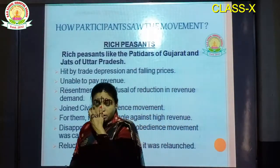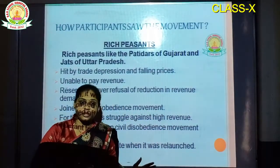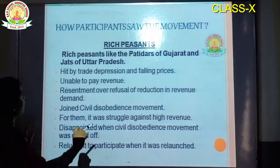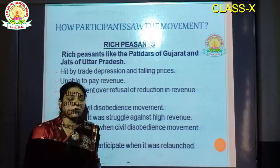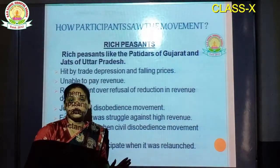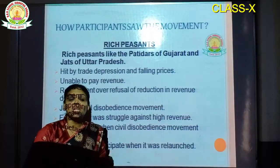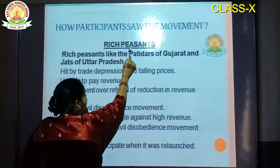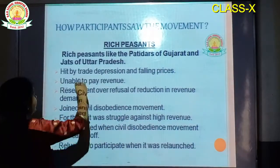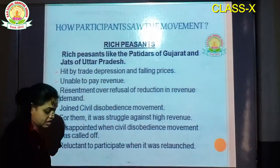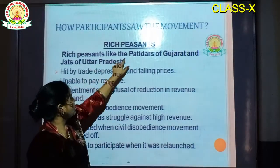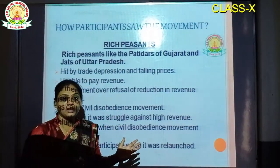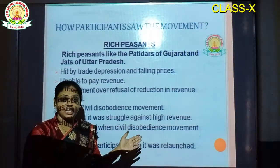Now we will see the ideology of the participants — not Gandhiji's ideology, but what is the ideology and demand of the participants, and how they participated in the second CDM movement. First, we will study about the rich peasants — like the Patidars of Gujarat and Jats of Uttar Pradesh. Their problem was being hit by trade depression and falling prices. They grew commercial crops.